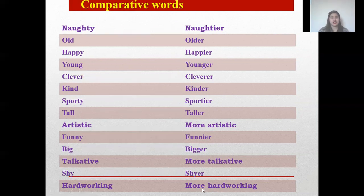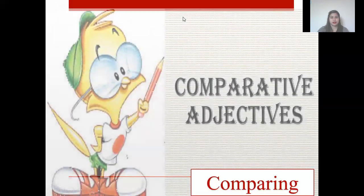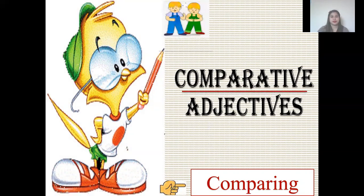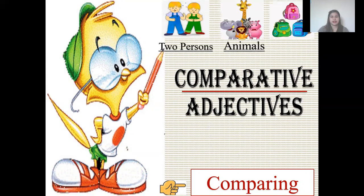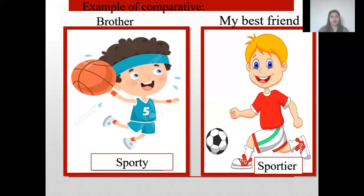When we say comparative, we are comparing. Again, when we say comparative, we are comparing two persons, animals, and things. Examples — this is my brother and this is my best friend. Sporty, sportier.